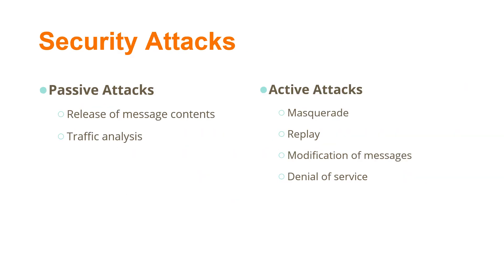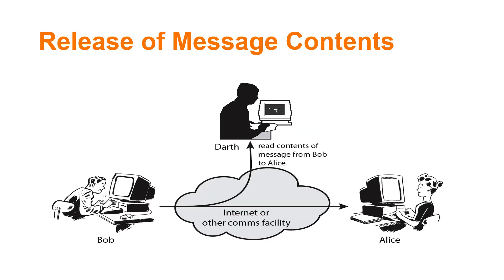As discussed, passive and active attacks are the two broad categories. Under passive attack, we have two types: one is release of message contents, and another one is traffic analysis. Under active attacks, we have four categories: number one is masquerading, number two is replay of messages, number three is modification of messages, and number four is denial of services. We will see all these types of attacks in upcoming slides.